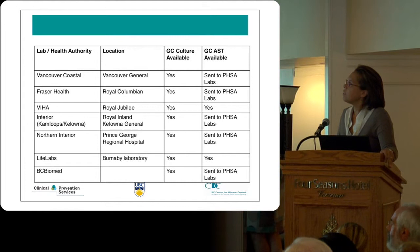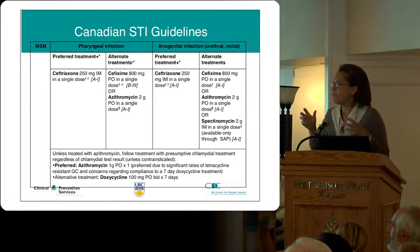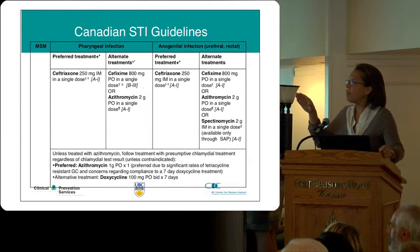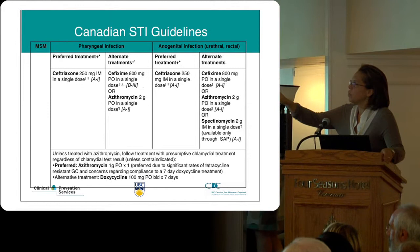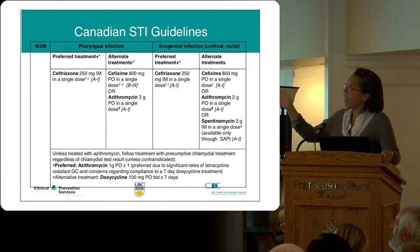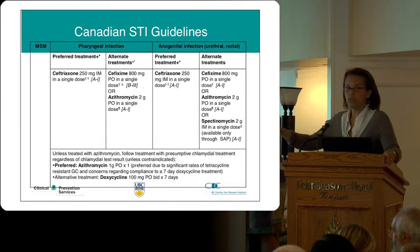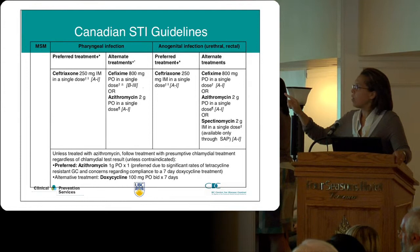Let's look at the treatment. The two key messages are: it's now always dual treatment for gonorrhea. We have divided recommendations between MSM — men who have sex with men — and others, because rectal specimens have the highest rates of antimicrobial resistance. The preferred treatment for pharyngeal and anogenital infection in MSM is ceftriaxone — and we've doubled the dose from 125 to 250 — plus co-treatment with azithromycin.